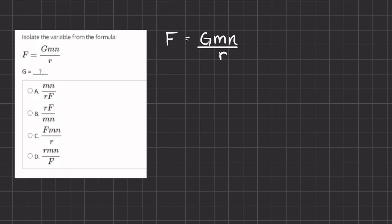In this problem we are given a formula and we want to isolate one of the variables, g. I rewrote the problem here on the right hand side so it would be easier for us to solve. Now this problem is exactly like how you would solve it with regular numbers. We are just using variables instead.